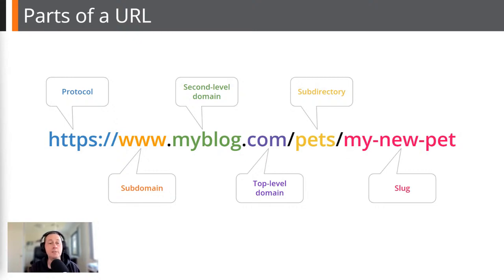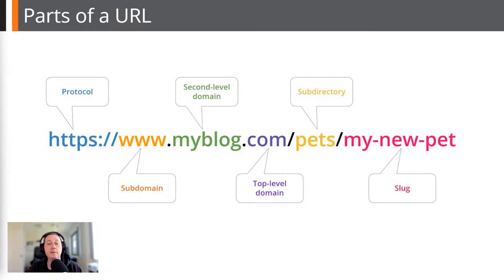The next part is a subdomain — shown in orange, which is 'www' in this example. Then in green is what's called the second-level domain, here it's 'myblog'. And finally in purple we have the top-level domain, which is '.com'. Sometimes a URL won't contain a subdomain, so it just displays the second-level and top-level domain — just 'myblog.com' rather than 'www.myblog.com'. A URL without a subdomain is called a naked domain, and over the past few years a lot more people are dropping the 'www'.